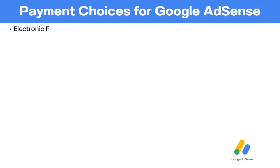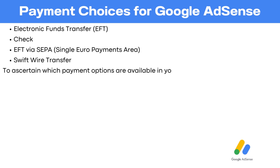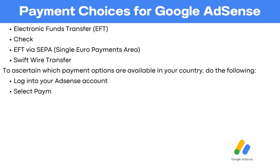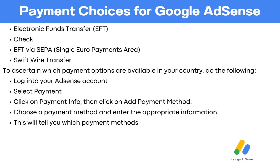Payment choices for Google AdSense include electronic funds transfer, check, EFT via SEPA, Swift wire transfer. To ascertain which payment options are available in your country, do the following: log into your AdSense account, select Payment, click on Payment Info, then click on Add Payment Method. Choose the payment method and enter the appropriate information. This will tell you which payment methods are accepted in your country.